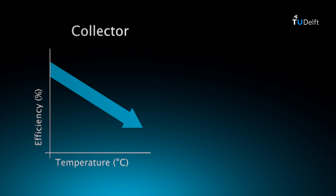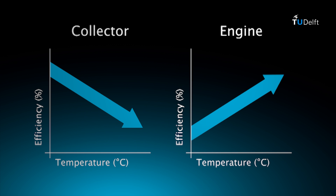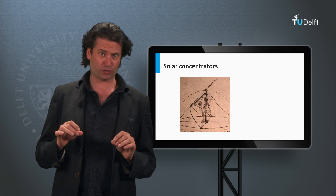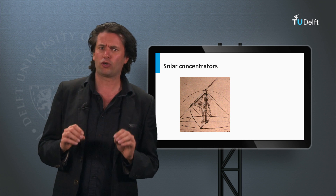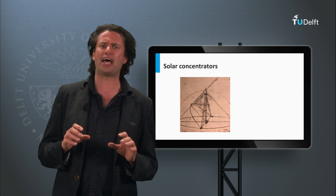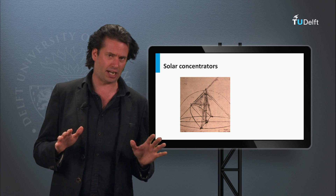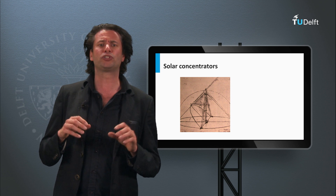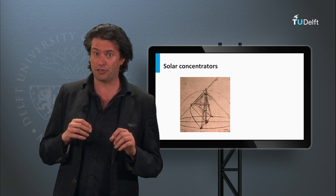A problem of these systems is that the efficiency of the collector diminishes as its operating temperature rises, while the efficiency of the engine increases as the temperature rises. So a compromise between the two has to be found when choosing the operating temperature. Let's now focus on the concentrator system. Solar concentration systems have been known and explored for a long time, from the first concept developed by Archimedes to the concentrators designed by Leonardo da Vinci.